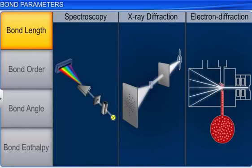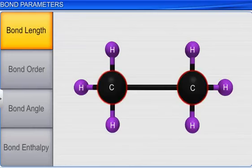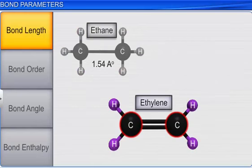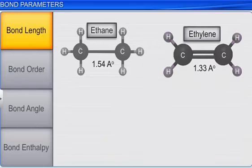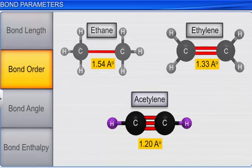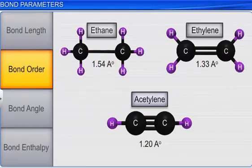The bond length between carbon atoms in an ethane molecule is calculated to be 1.54 angstrom units. The carbon-to-carbon bond length in ethylene is 1.33 angstrom units. In acetylene, it is 1.20 angstrom units. This difference in bond length leads us to our next parameter: bond order. The number of chemical bonds between a pair of atoms in a molecule is called the bond order of the molecule.